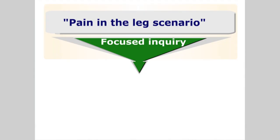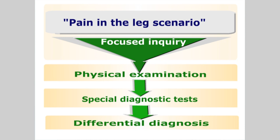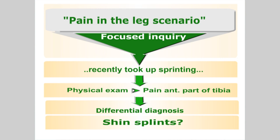If we now fast forward this clinical encounter to a point after the case history and physical examination have been carried out, you should be in a position to localize the source of the pain and the structure involved. Let us assume the pain was localized over the tibia. The case history yielded information that the patient recently took up sprinting. After having examined the leg and excluded the adjacent joints, the vascular and neurological supply, and the possibility of infection, one of the possible diagnoses could be shin splints.